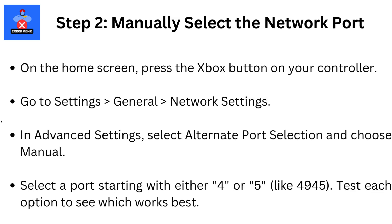Step 2: Manually select the network port. On the home screen, press the Xbox button on your controller. Go to Settings, then General, then Network Settings. In Advanced Settings, select Alternate Port Selection and choose Manual. Select a port starting with either 4 or 5, like 4945.